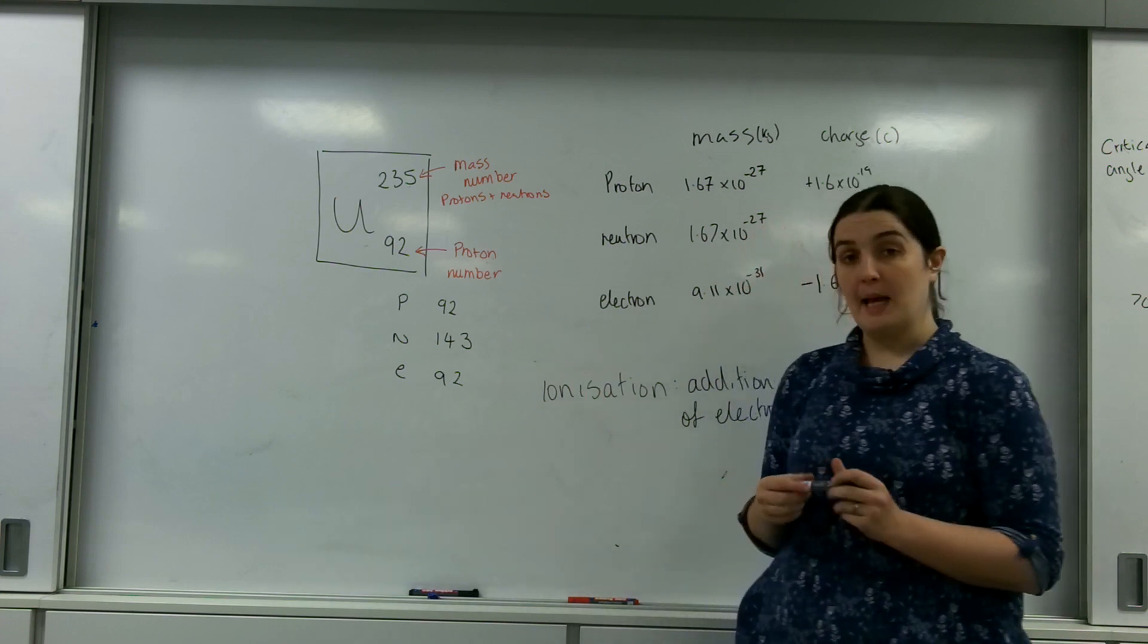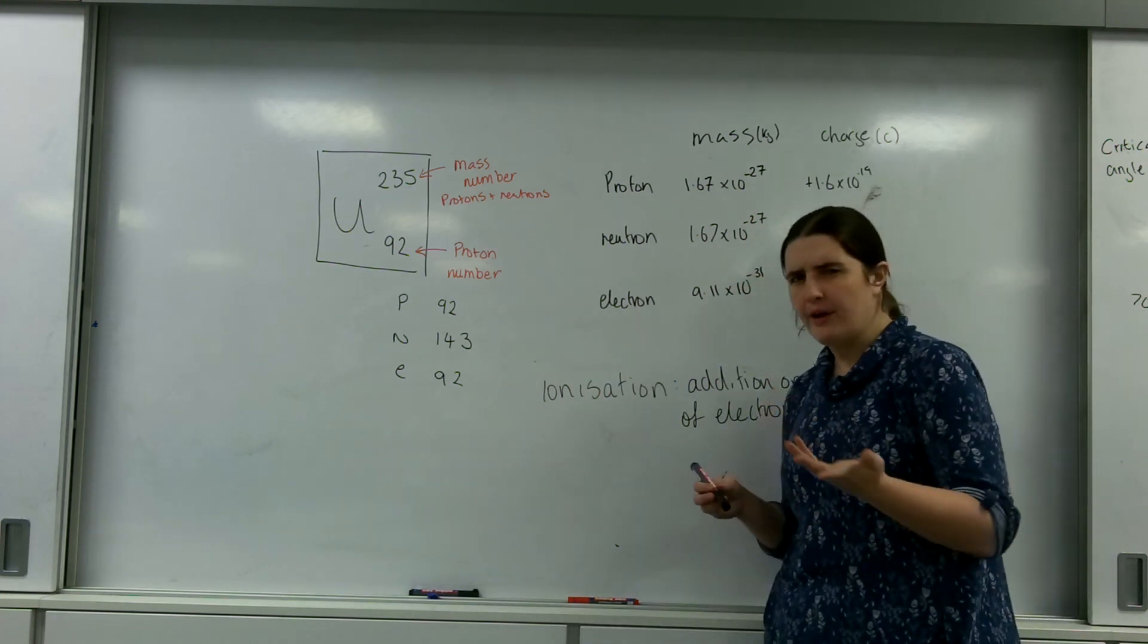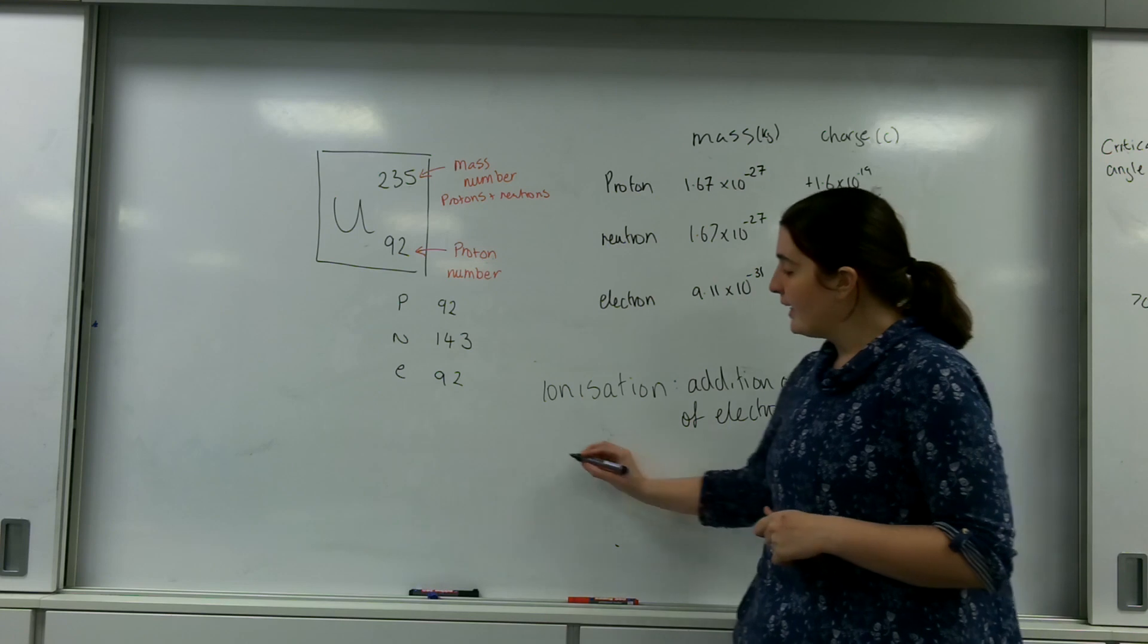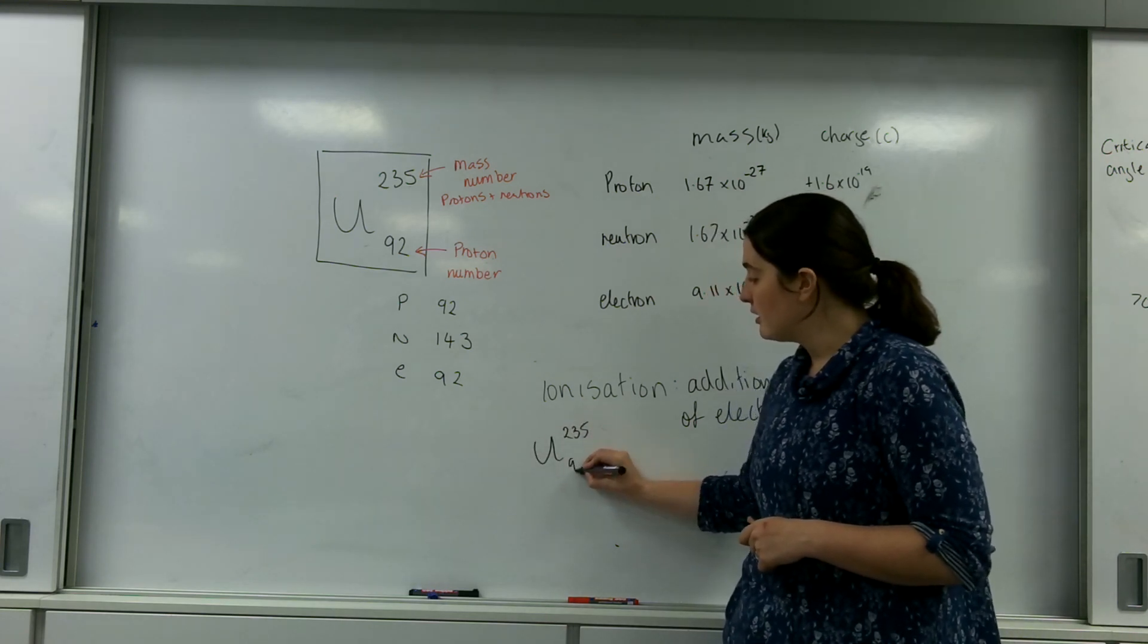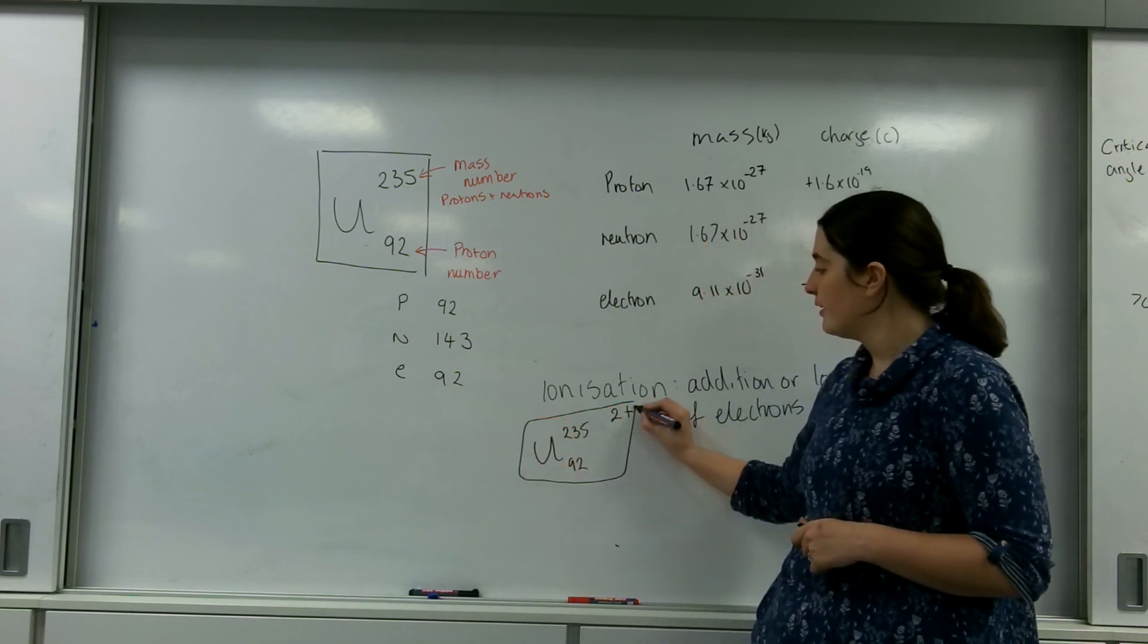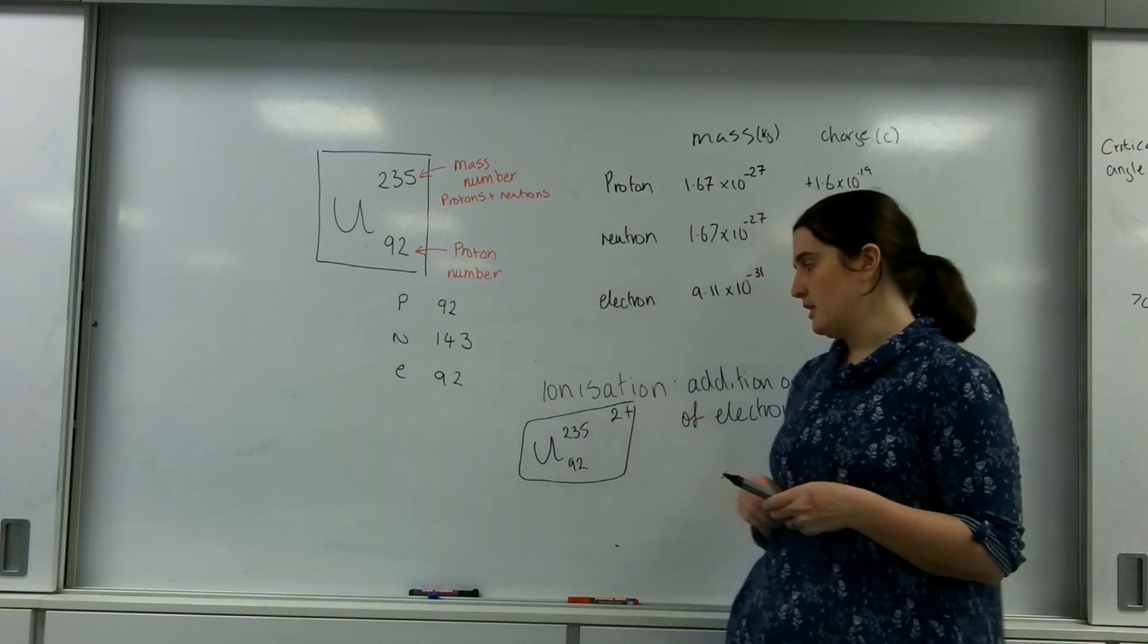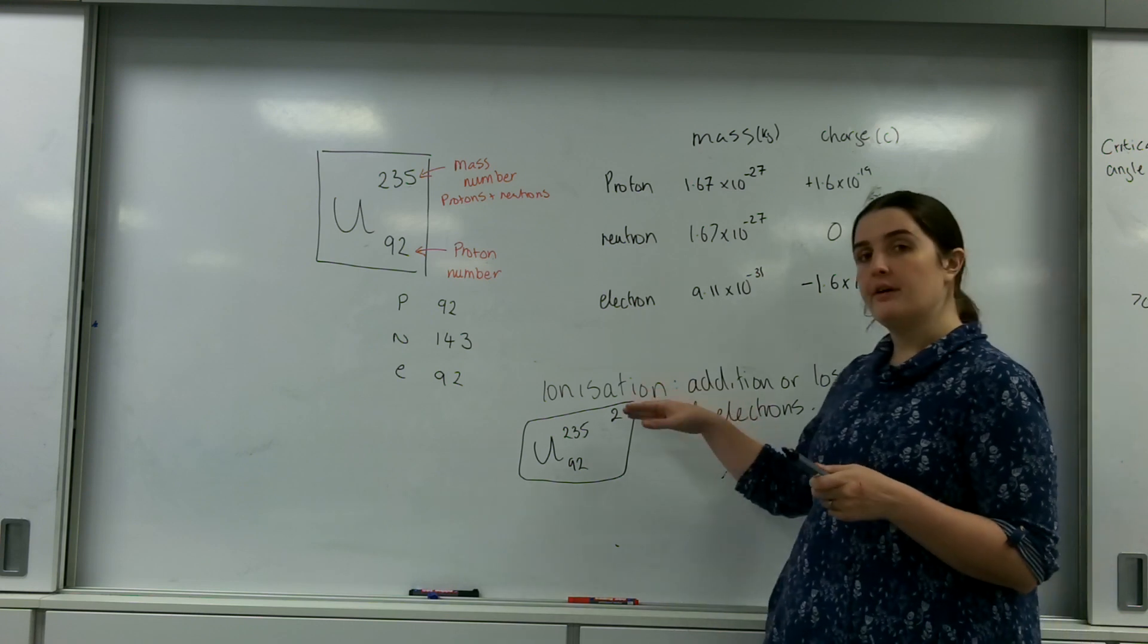So I'm going to take this as an example, and I'm going to say that I now have an ion - and I apologize chemists if this is completely wrong, I am just using this as an example. I now have an ion of uranium-235-92-2+. This means I have two more positive charges than I do negative charges. So this has been ionized.